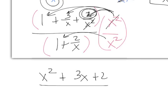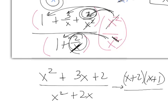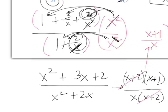In the denominator: x squared times 1 gives x squared, and x squared times 2 over x has one x cancel, leaving 2x. Factoring the numerator x squared plus 3x plus 2 gives x plus 2 times x plus 1. The denominator x squared plus 2x factors as x times x plus 2. The x plus 2 factors cancel, leaving x plus 1 over x — the exact same answer as Method 1.